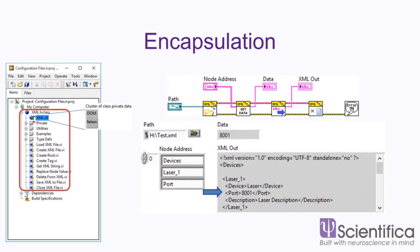We can unbundle the object and get to that private data, or use the bundle by name function to bundle into the object. Methods can use this private data to perform functionality. By encapsulating this functionality and the private data together, we make a really nice API — Application Programming Interface. This API can open a file, get data out of it, view the entire contents of the file, close the reference, and then check for errors at the end.